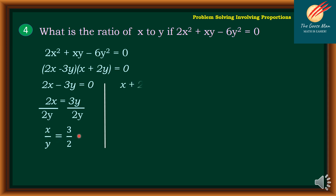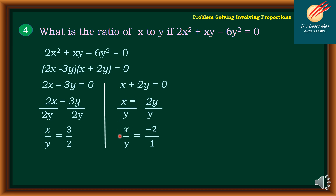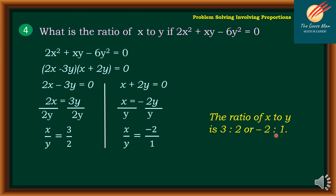On the other hand, I have x plus 2y equals 0. Isolate the variable x by subtracting 2y from both sides: x equals negative 2y. Then divide both sides by y, so x over y equals negative 2. Notice that I'm working with the ratio, so I put negative 2 as the numerator over denominator 1. Therefore, the ratio of x to y is 3 is to 2, or negative 2 is to 1.